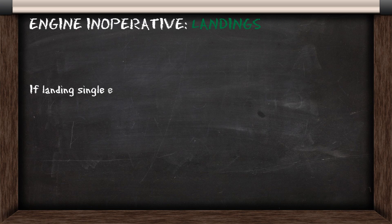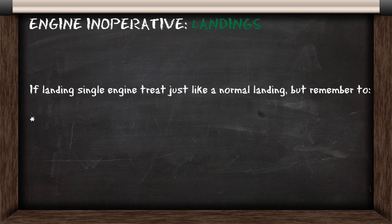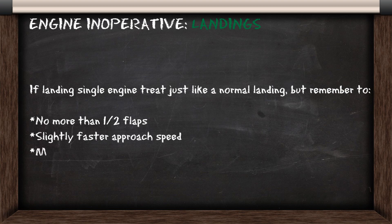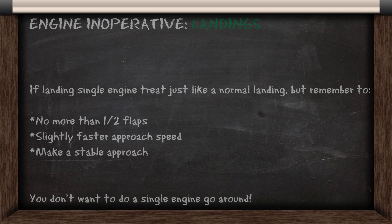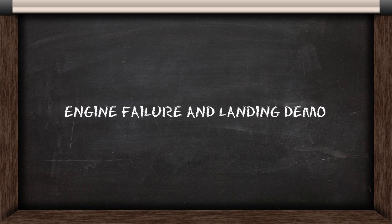Now if you've lost an engine, you're going to have to deal with a single engine landing. Treat it just like a normal landing, but remember to not use more than half flaps. You can have a slightly faster approach speed if you like, but just make sure it's a stable approach, because you don't want to have to do a single engine go-around. Now we'll demo the engine failure and the single engine landing.